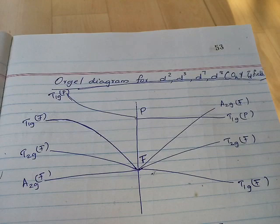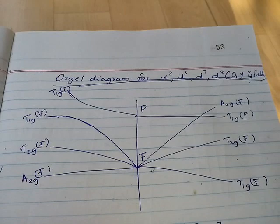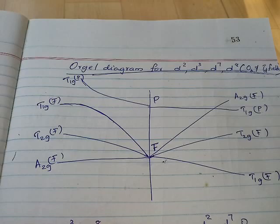Here we notice the Orgel diagram for D2, D3, D7, and D8 octahedral and tetrahedral field. We can see that for D2, D3, D7, D8 configuration, the lower energy terms — F and P terms — are taken.